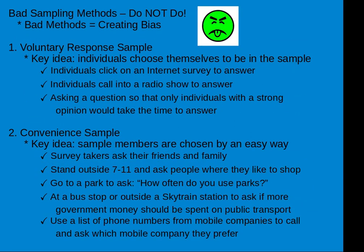Now there are some bad sampling methods which we do not want to do. Bad methods mean you're creating bias. The first is voluntary response sample. The key idea is individuals choose themselves to be part of the sample. You can see this when you see a survey on the internet and you click to answer some questions, or people calling in to a radio or TV show to respond to a question. Another way this happens is by asking a question such that only people with a strong opinion would take the time to answer. All of these create bias of the voluntary response sample type.